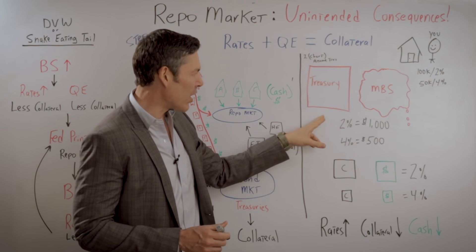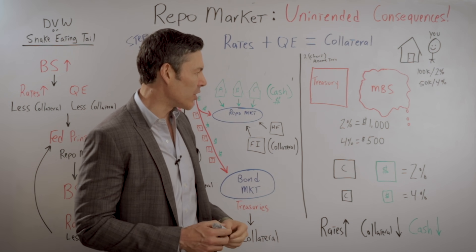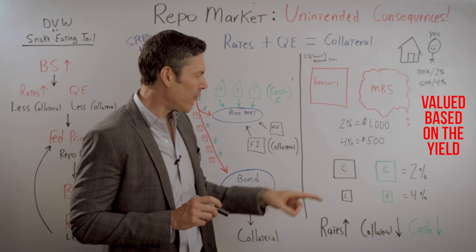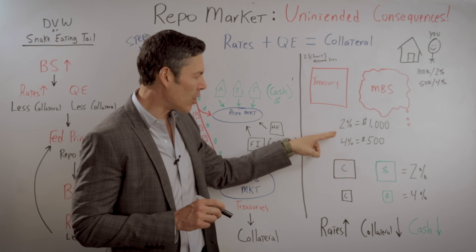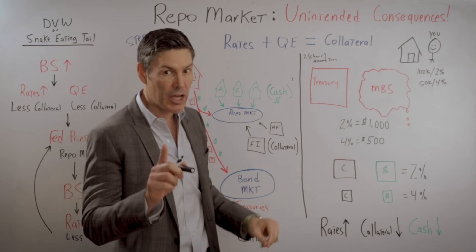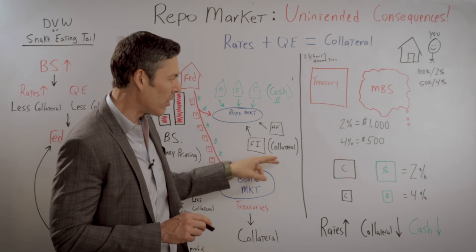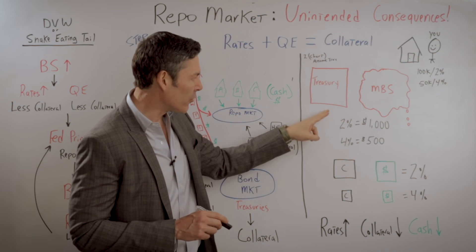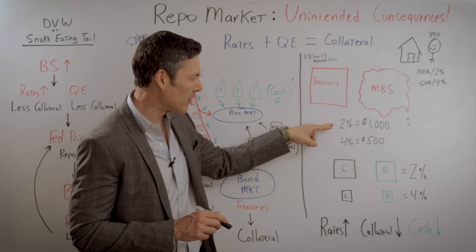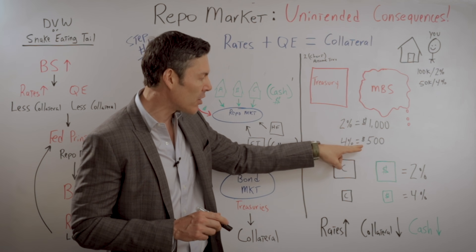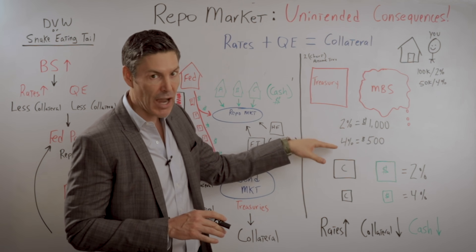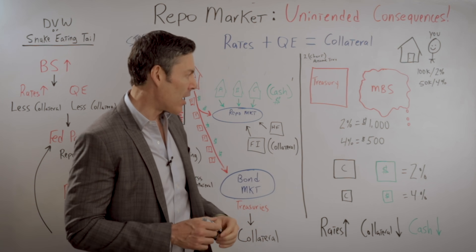These treasuries and mortgage-backed securities are valued based on the yield. Therefore, if interest rates go up, the value of the treasury or the mortgage-backed security — in other words, collateral — actually goes down. So if this treasury is worth $1,000 at 2%, it may be worth only $500 at 4%. Keep in mind, these are not exact numbers — I'm just using them as an example.